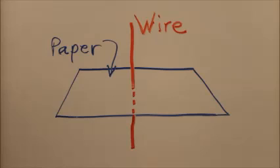We scatter iron filings on the paper and then drive a steady, strong, direct current through the wire. What will the iron filings do?